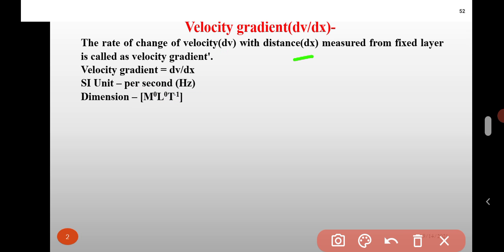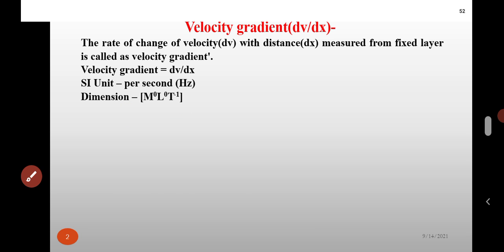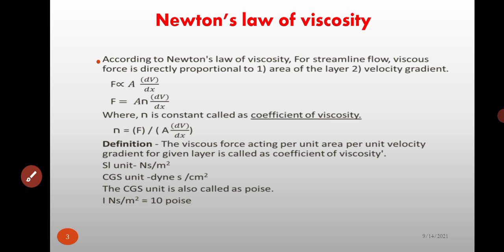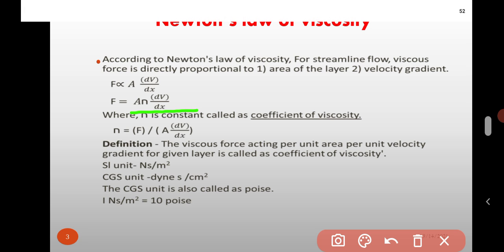The dimensions of velocity gradient are M⁰, L⁰, T⁻¹. Next topic is Newton's Law of Viscosity.